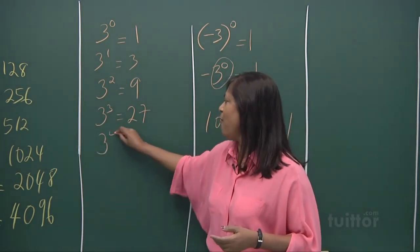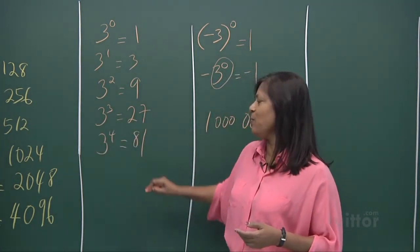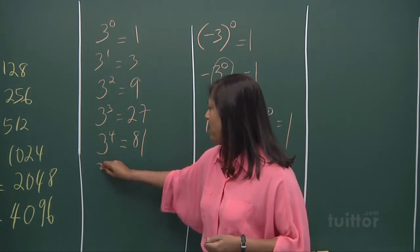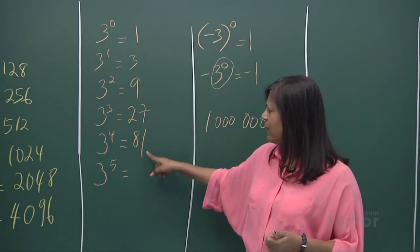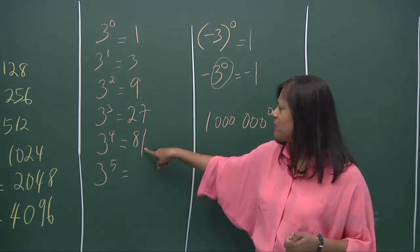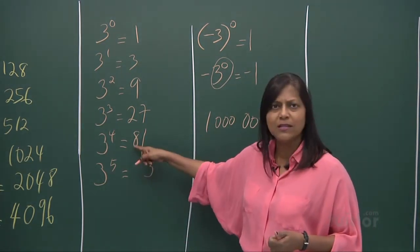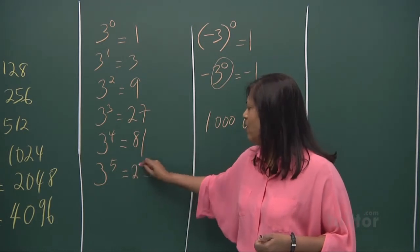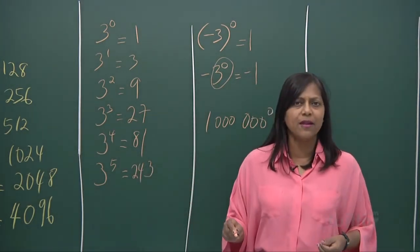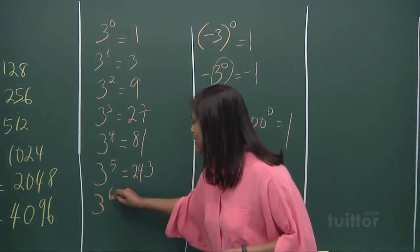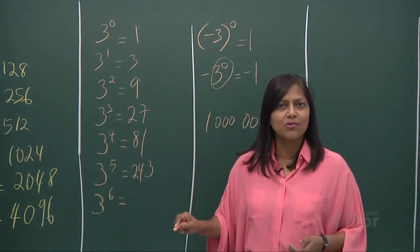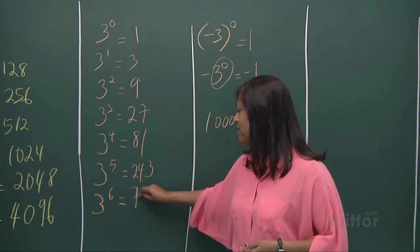3 to the power of 4, you get an 81. And 3 to the power of 5, 81 times 3. Just look at it very easily. 3 times 1, 3. 3 times 8, 24. So you've got a 243. 3 to the power of 6, well, 243 times 3, you get a 729. It's very comfortable going right up to here.